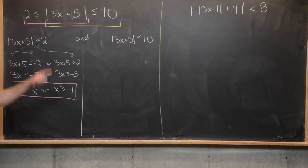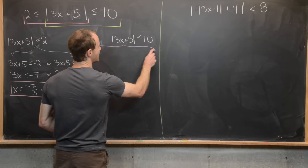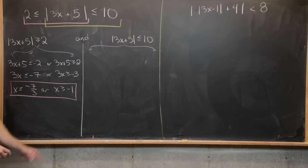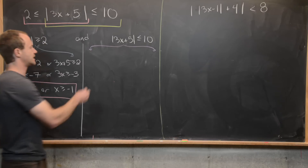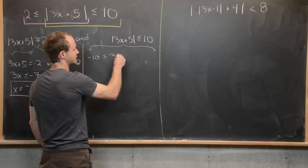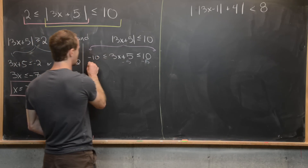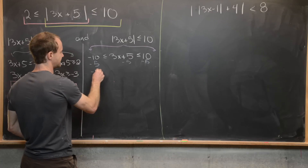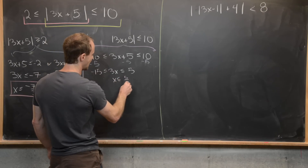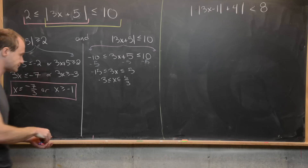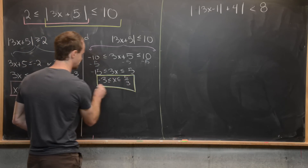Now let's work on the yellow one: the absolute value of 3x plus 5 is less than or equal to 10. We split this into a compound inequality not involving absolute values — and we can write it as a triple inequality: negative 10 is less than or equal to 3x plus 5, which is less than or equal to 10. Subtracting 5 from all parts gives us negative 15 is less than or equal to 3x is less than or equal to 5, which tells us x is between negative 3 and 5 thirds. That gets a yellow box.